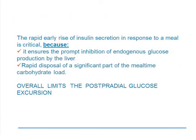The first phase of insulin secretion — the rapid rise in insulin as soon as you start to eat — is important. It ensures the prompt inhibition of hepatic glucose output and a rapid disposal of a significant part of the meal into oxidative processes rather than into storage processes, and thereby you limit the postprandial glucose excursion.